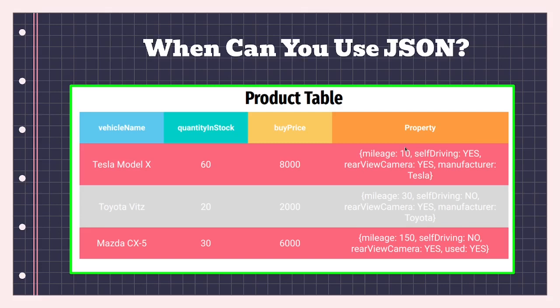JSON is a key-value pair. For example, mileage colon the value, self-driving car colon yes or no, rear view mirror colon yes or no, manufacturer colon Toyota. You can see we have the same information but now also have the manufacturer. Each product can have its own set of properties or features without having to create a new column. You can group everything together and put it in one column of type JSON.